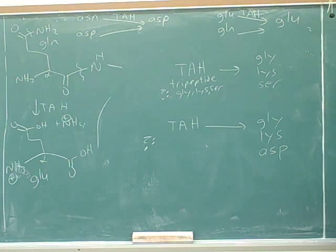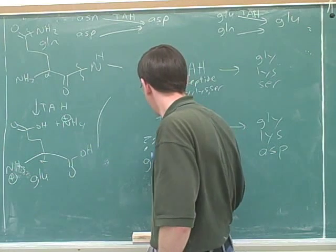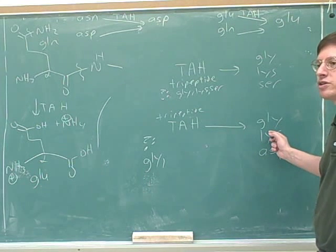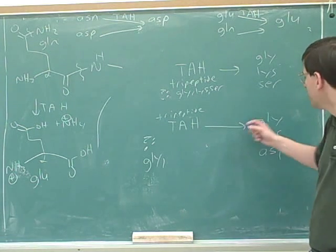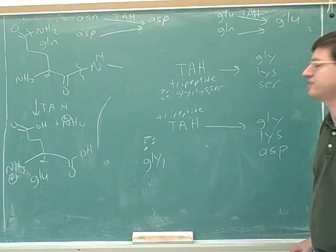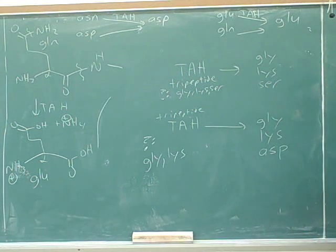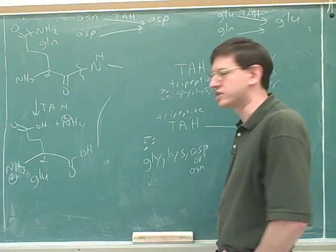Now let's say we do a total acid hydrolysis and we get three amino acids including glycine and lysine. We know the order matters but we don't know that yet — that's something we'll figure out later. All we're trying to learn right now is the components. So we know there was a glycine and a lysine. What about the third amino acid? It could have been either aspartic acid or asparagine.